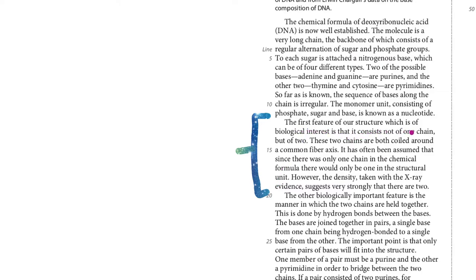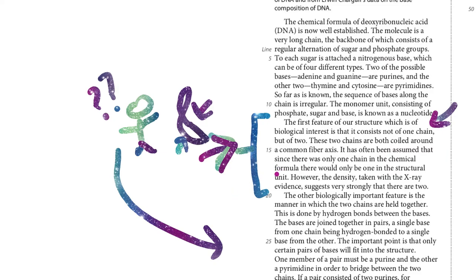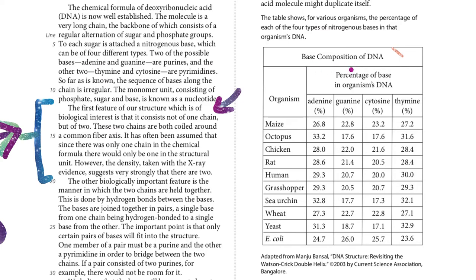All right. So it says the first feature of our structure, which is a biological interest, that it consists of not one chain, but two. So they thought it was one chain, but it's actually two. These two chains are both coiled around a common fiber axis. It has often been assumed that since there was only one chain in the chemical formula, there would be only one in the structural unit. However, the density taken with the x-ray evidence suggests very strongly that there are two. All right. So it said these scientists were like, wait, this is actually two coils, not only one. There's one, two. All right. And then this is what made them, prompted them to start this research below. Okay. And that's basically it. This is the reason why they started it. This understanding helps you with the questions that talk about like, why did, why was this experiment done? All that kind of stuff.